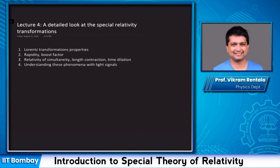This dictionary will enable us to translate observations between one inertial observer and another inertial observer who is moving with respect to the first one at a constant velocity v. These transformations were first derived by Lorentz, and he showed that Maxwell's equations transform correctly under these Lorentz transformations.